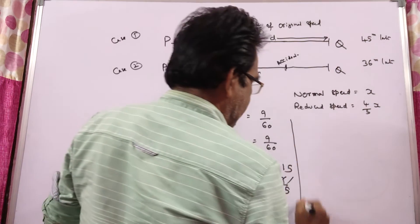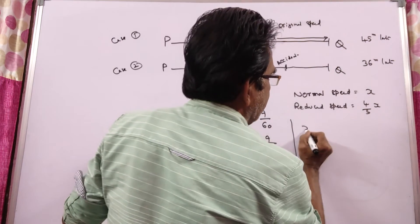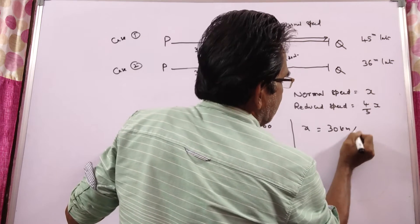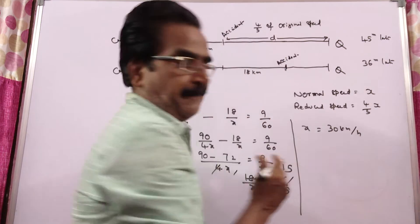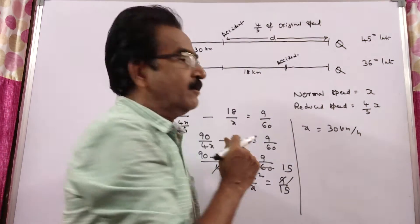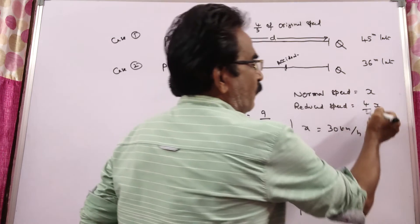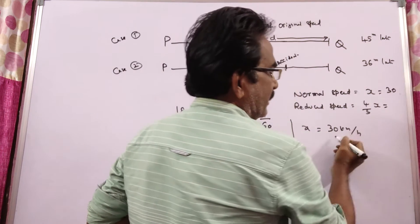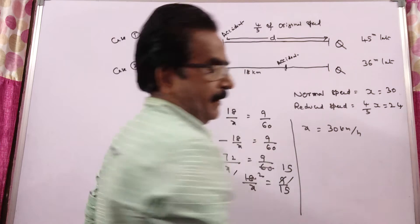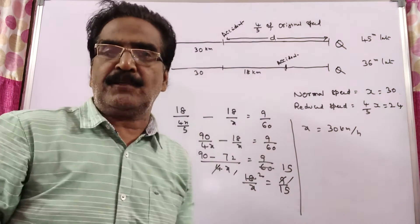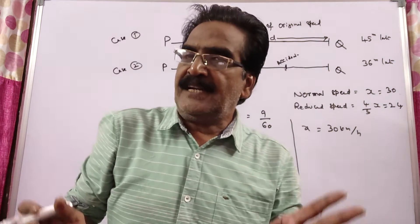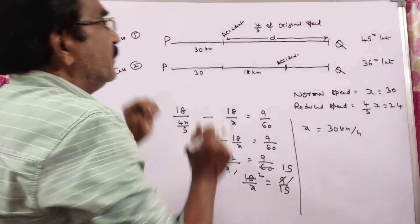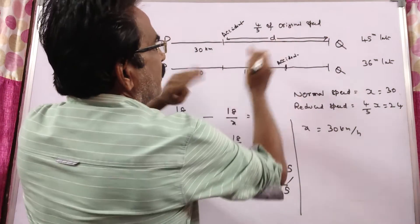Solving this, x is equal to 30 km/h, which means the normal speed is 30 km/h. So then the reduced speed is 4/5 of 30, that is 24 km/h. Now let us try to find the distance between P and Q.